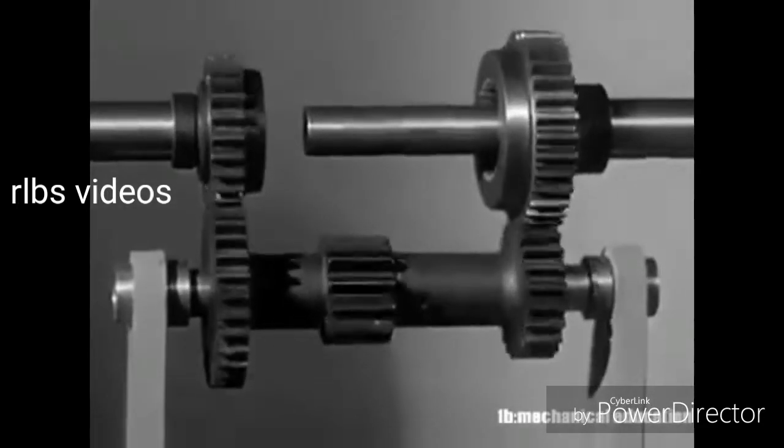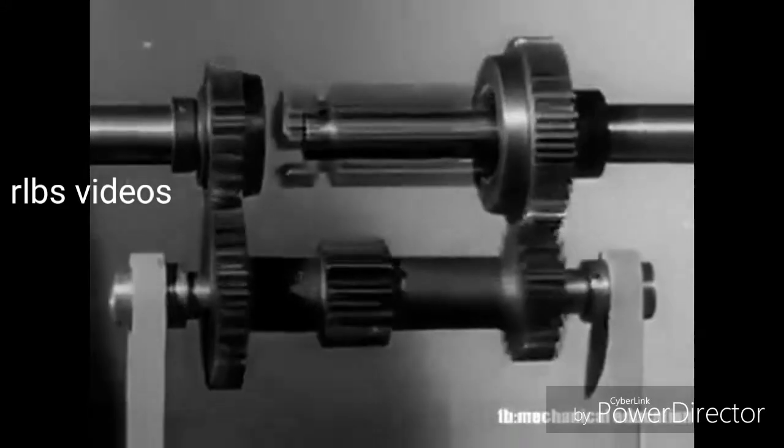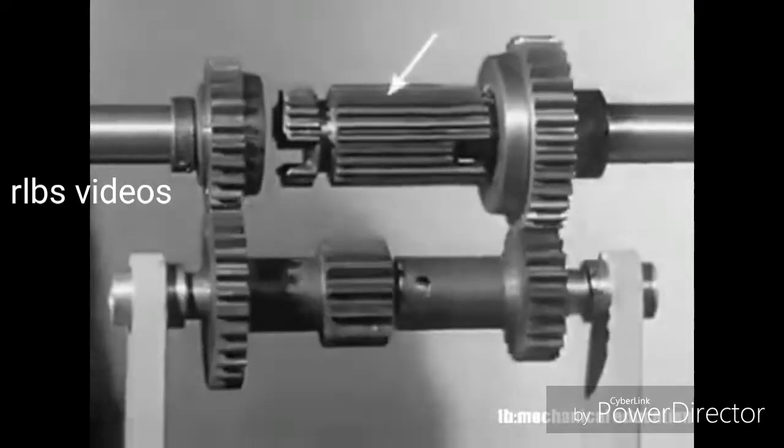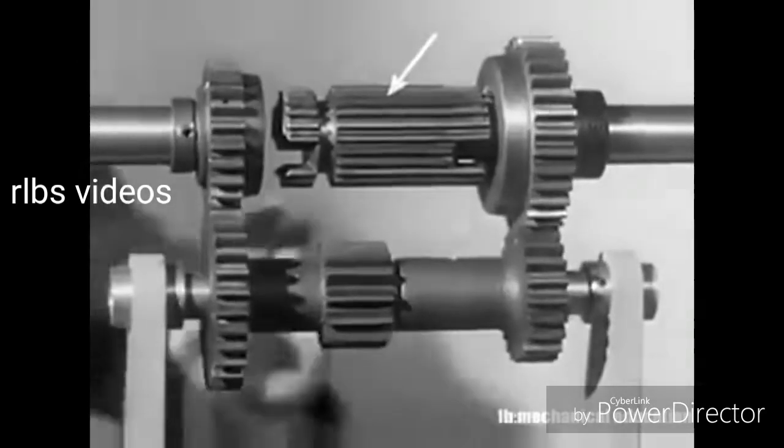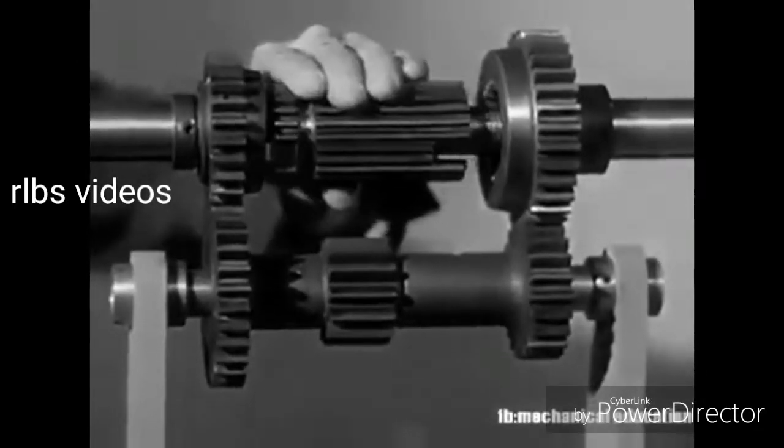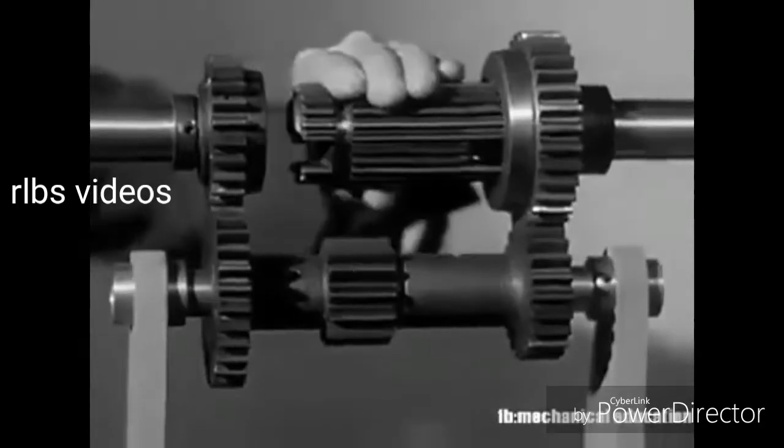To switch from one set of gears to another, our transmission needs a short shaft like this, known as a clutch sleeve. It cannot turn on the drive shaft, but it is free to slide back and forth.